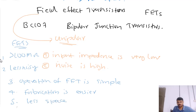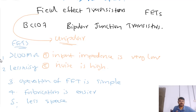FETs can be used as amplifiers just like a BJT or ordinary transistor. Also, FET can be used as resistors. It can be used as capacitors also. So you can have a circuit which consists only of FETs, because FET can work as an amplifier, it can work as a capacitor, and it can work as a resistor. Because of these reasons, FETs are now very popular.